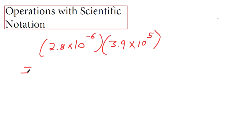So what we're going to do is use a property of multiplication that we studied earlier. The order you multiply doesn't matter, right? You can do 2.8 times 3.9. Let's multiply the plain old numbers together.